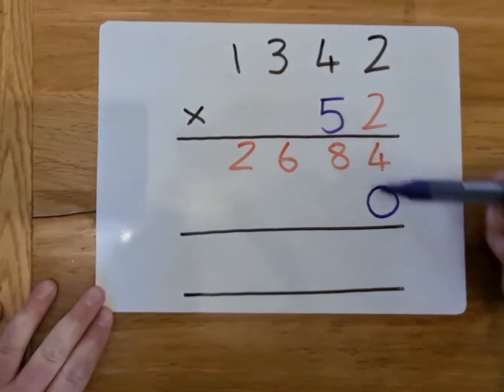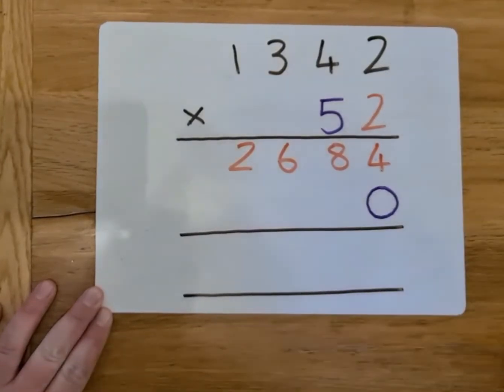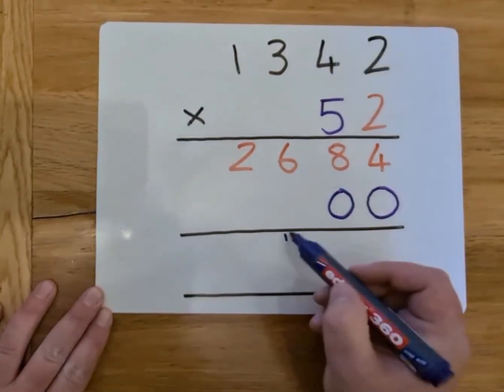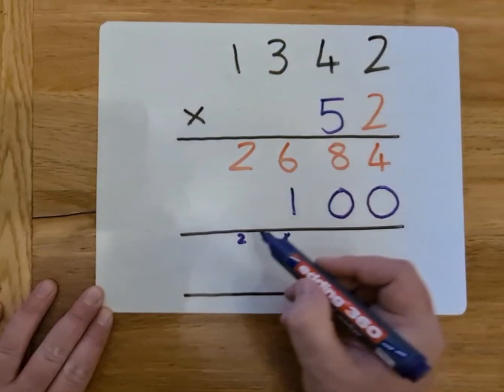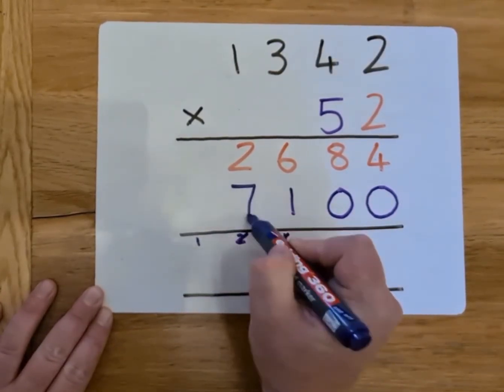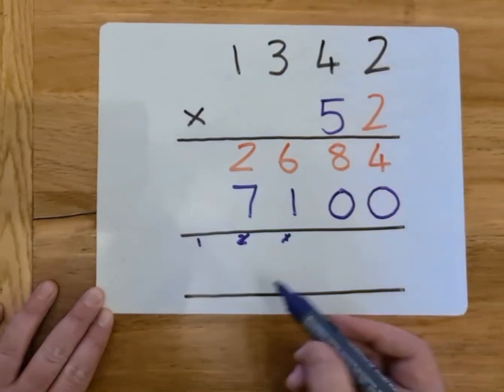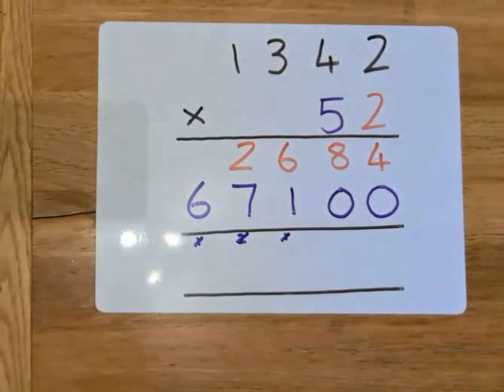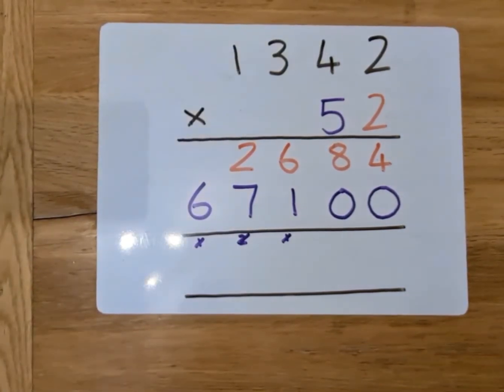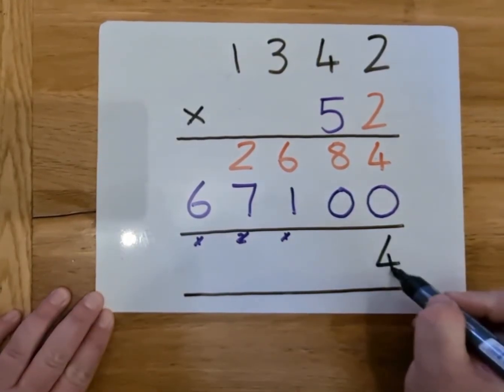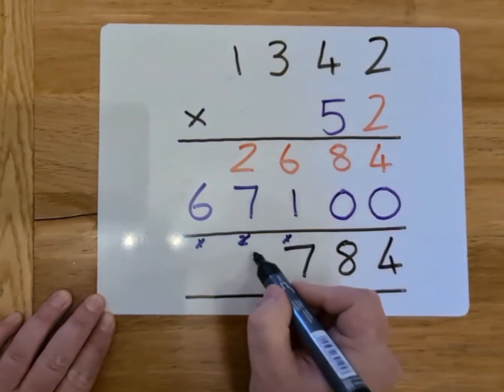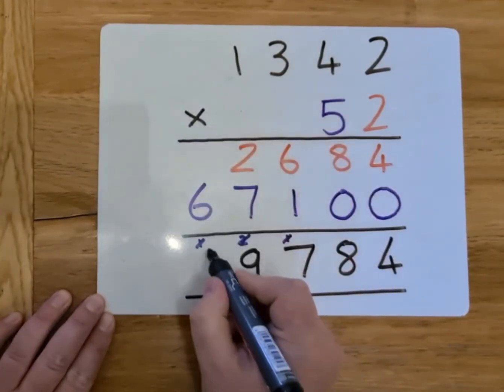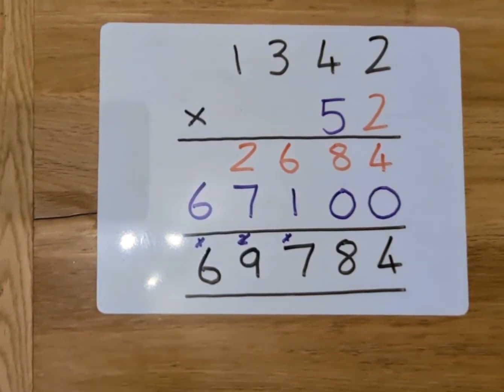Now, we'll move on to the tens. We've put our zero in already. So, 5 times 2 is 10. Carry the 1. And the zero goes there. 5 times 4 is 20. Add the extra 1 is 21. 5 times 3 is 15. Add the extra 2 makes it 17. And 5 times 1 is 5. Add the extra 1 is 6. Now, we can add those numbers together. 4 add 0 is 4. 8 add 0 is 8. 6 add 1 is 7. 2 add 7 is 9. And nothing add 6 is 6. So, our answer is 69,784.